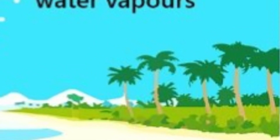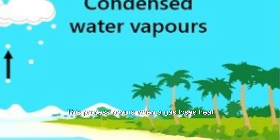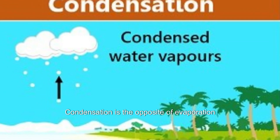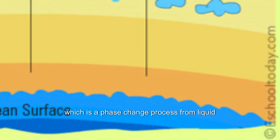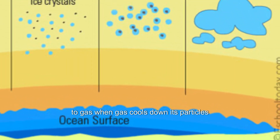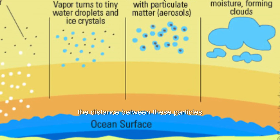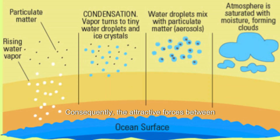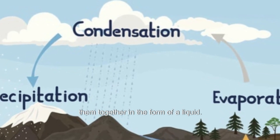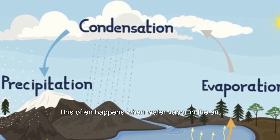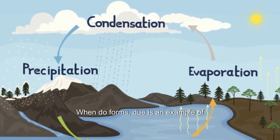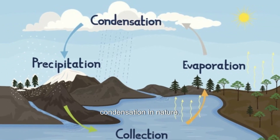Condensation is one of the processes of changing the phase of matter from a gas to a liquid. This process occurs when a gas loses heat energy and then transforms into a liquid. Condensation is the opposite of evaporation, which is the phase change process from liquid to gas. When a gas cools down, its particles lose their kinetic energy and the distance between these particles becomes closer. Consequently, the attractive forces between the particles become strong enough to keep them together in the form of a liquid. This often happens when water vapor in the air encounters a cold surface, such as a window pane on a chilly morning when dew forms. Dew is an example of condensation in nature.